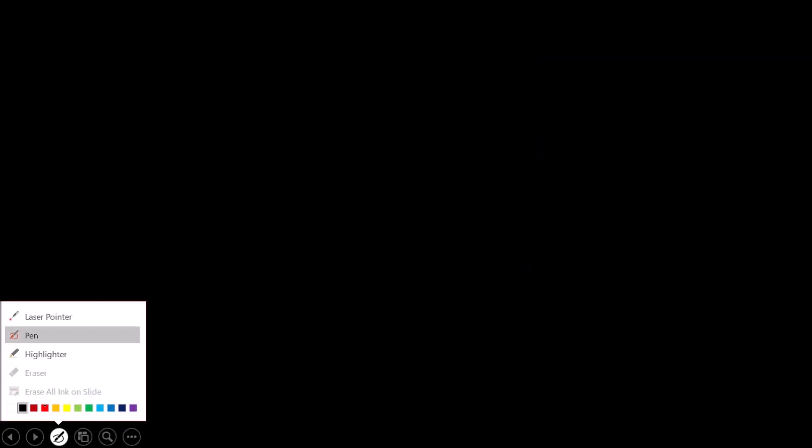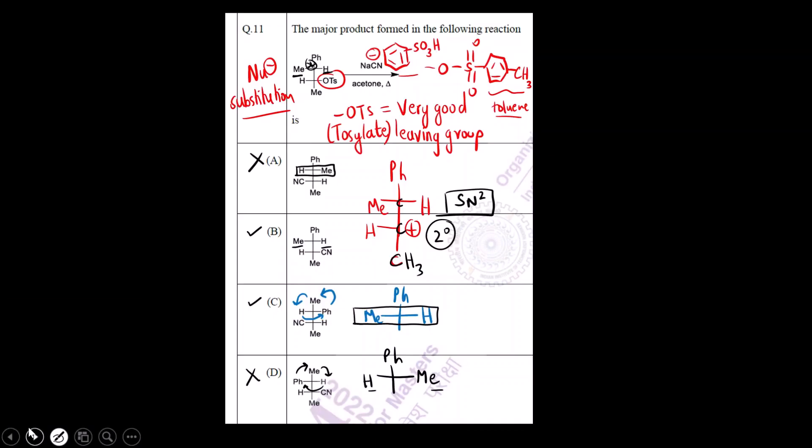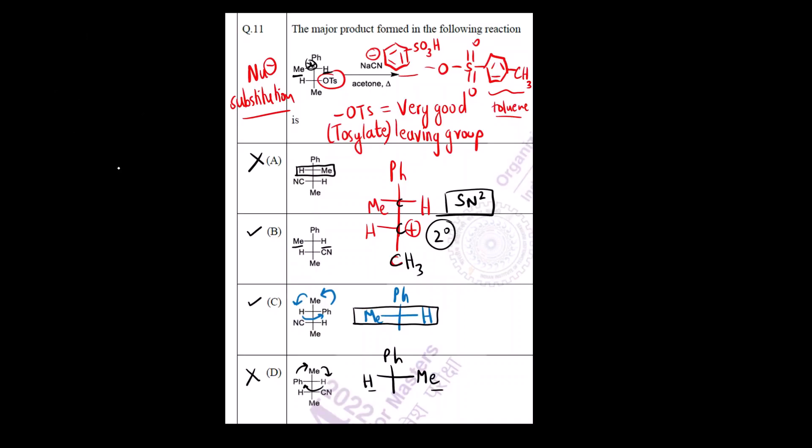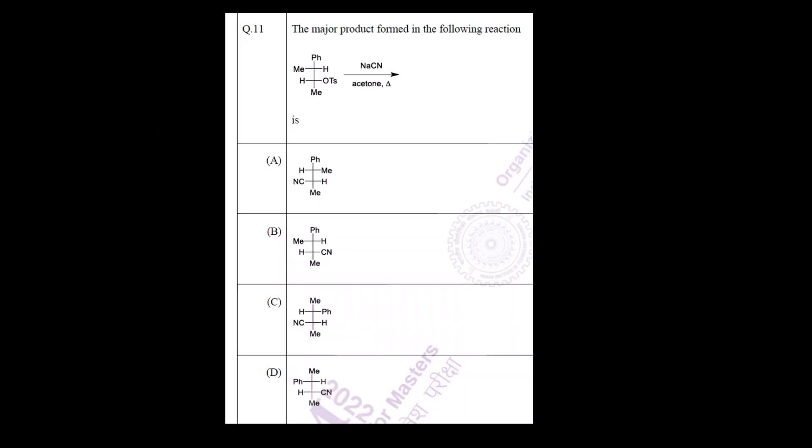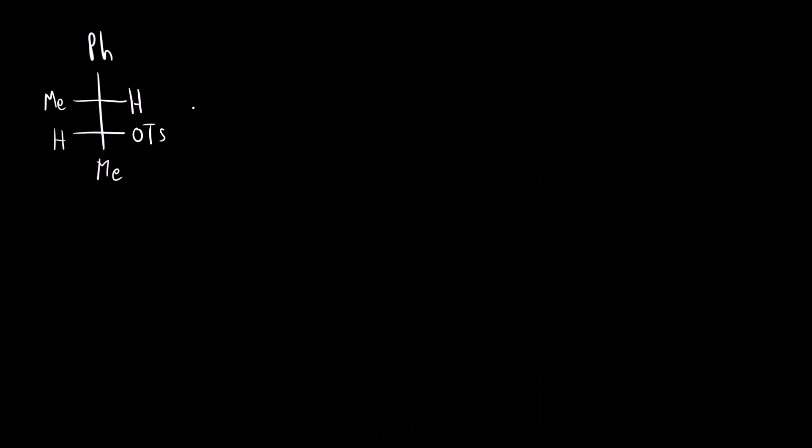Now let us solve the question. What is the reactant? Let us first draw that. So we have Ph, Me, H, OTS and here we have Me. We are reacting with NaCN. We know this is an SN2 mechanism as we discussed, because the carbocation formed is not very stable. So we will follow SN2 mechanism.